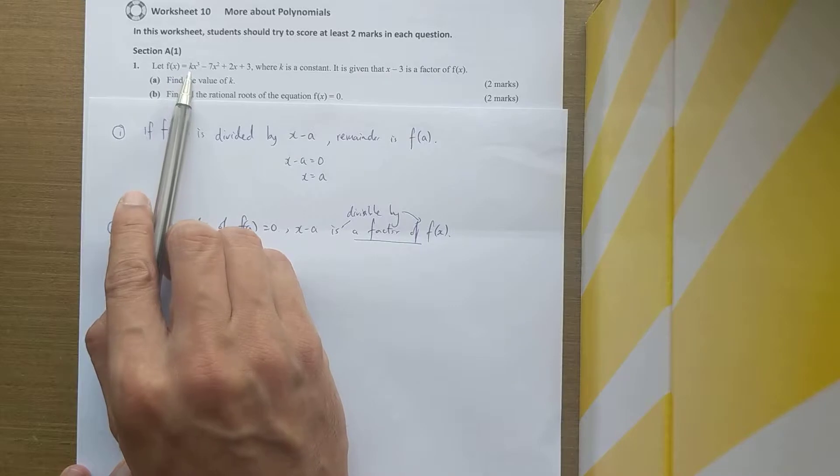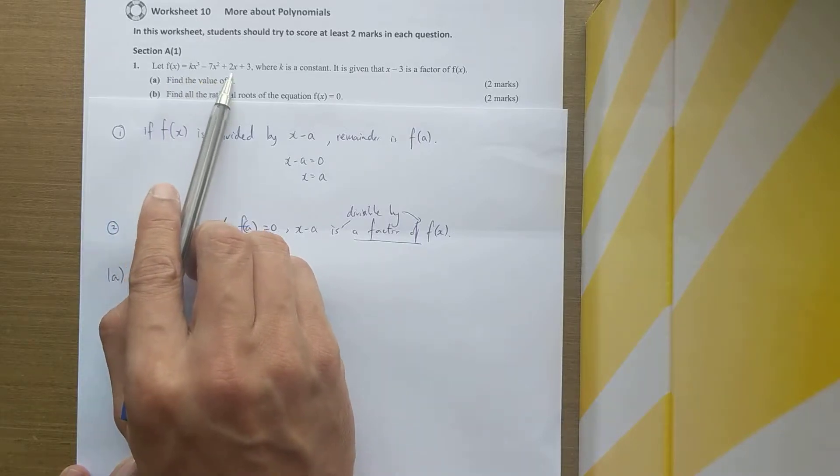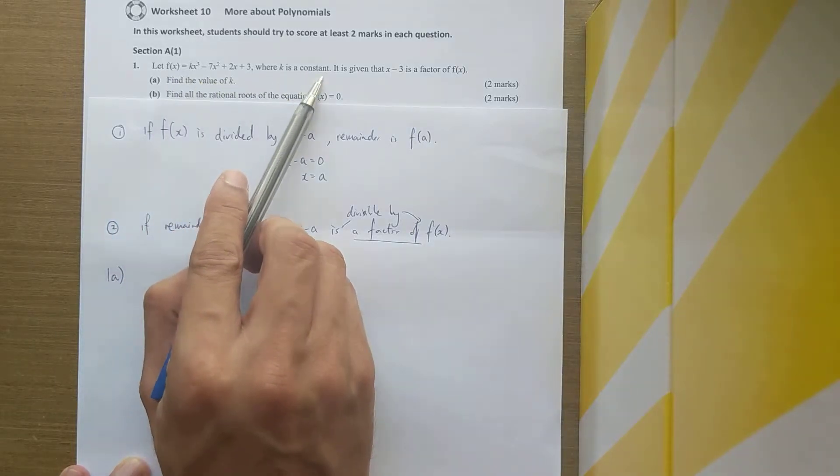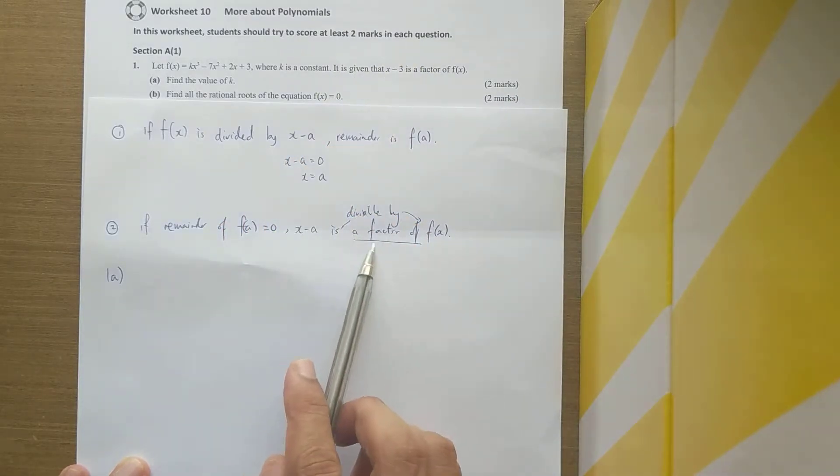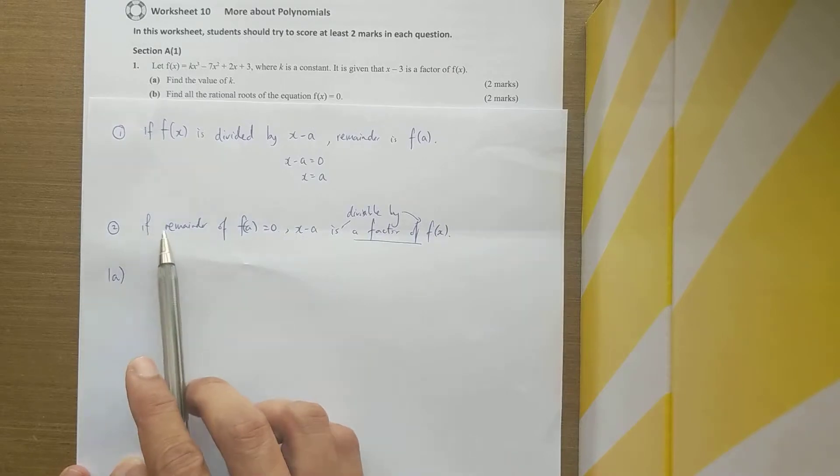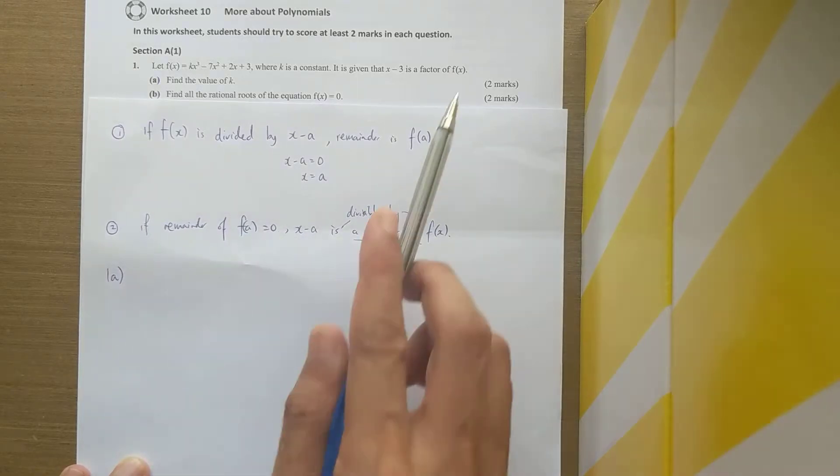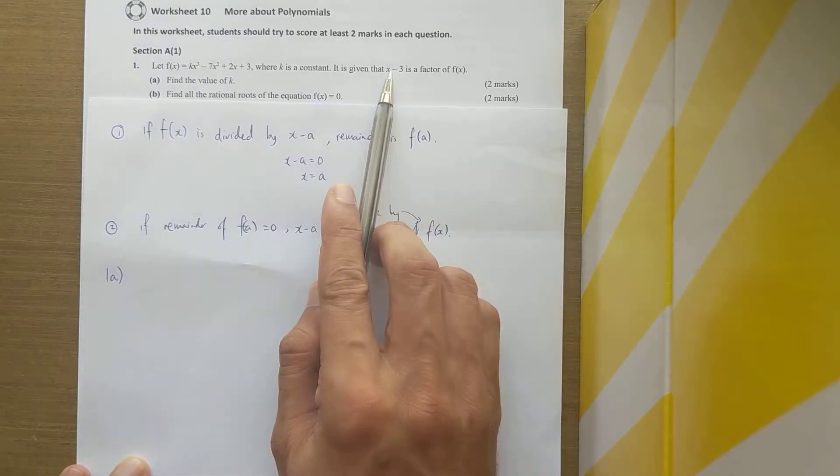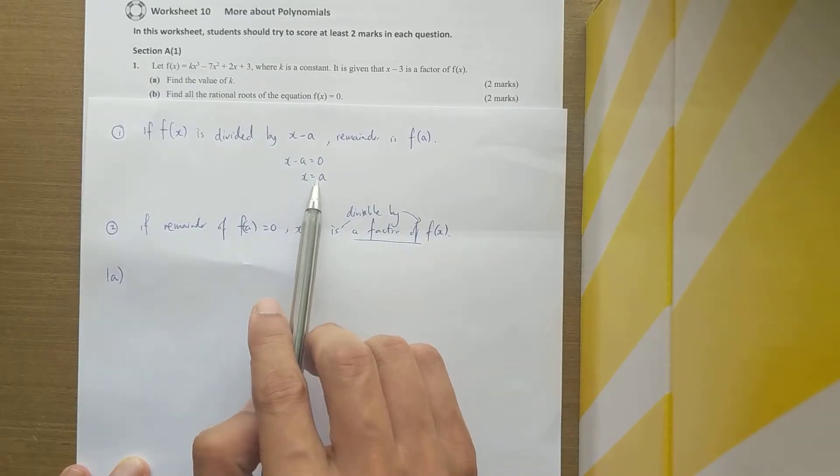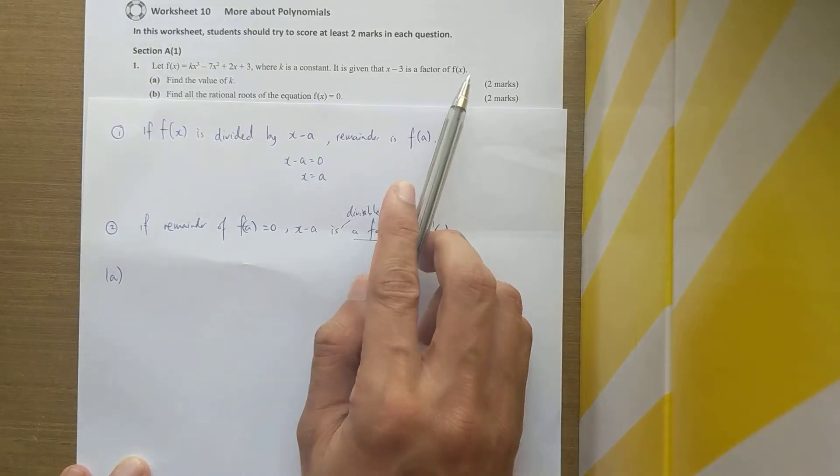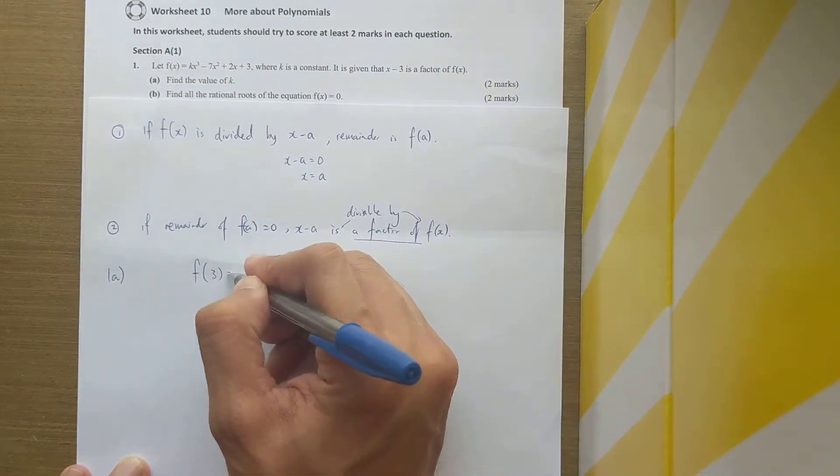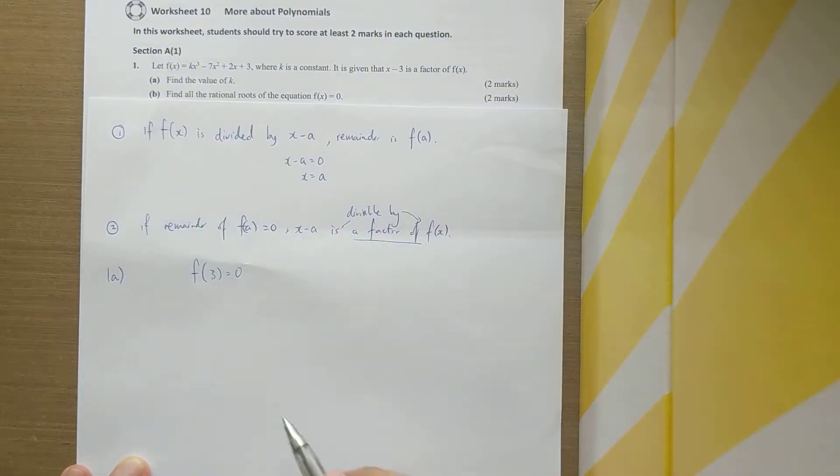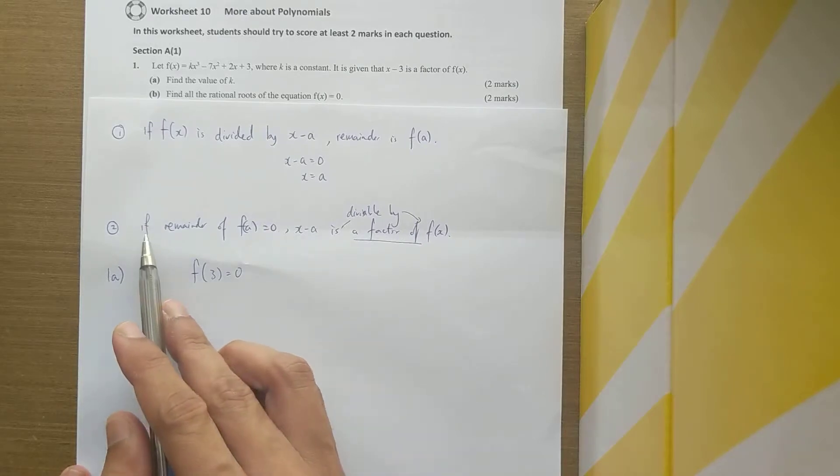If you look at number 1a, f(x) equals kx cubed minus 7x squared plus 2x plus 3, where k is a constant, and it's given that x minus 3 is a factor. So it's a factor, which means the remainder will be 0 when you put x minus 3 equal to 0. So x needs to be equal to 3, and f(3) equals 0.